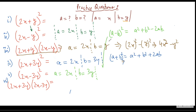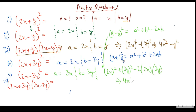So this will be equal to (2x)² + (3y)² minus 2 into 2x into 3y. This would be equal to 4x² + 9y² minus 12xy. Any doubt? No doubt.